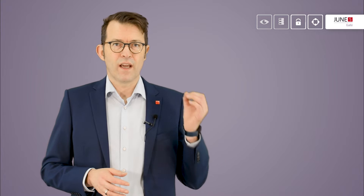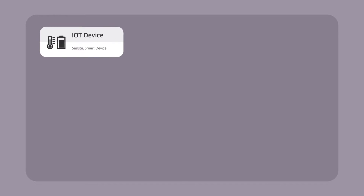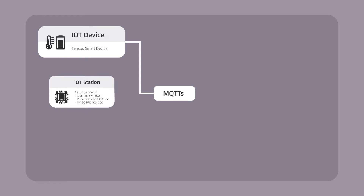On the source side, you can use different types. The first of these are IoT devices — smart meters or other simple devices that make data available via MQTTS. Secondly, we are talking about so-called IoT stations: more complex devices such as PLC systems that in turn have an MQTTS module as well. Here too, we place great emphasis on manufacturer independence.